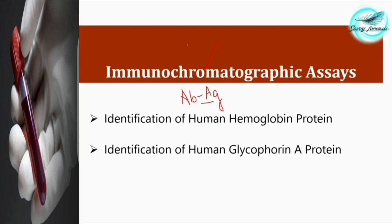These tests, in the case of blood, are carried out on the basis of identification of two particular entities of the blood. The first would be human hemoglobin, and the second would be the identification of human glycophorin A. By detecting these two entities through immunochromatographic assay, we can detect the presence of blood in a particular biological sample.